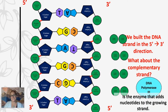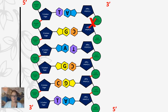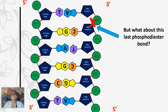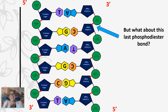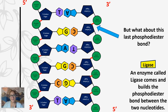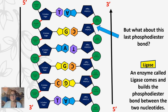DNA polymerase 3 is the enzyme that adds nucleotides to the growing strand. But there was a spot where there was no energy to form that phosphodiester bond. So there's a separate enzyme called ligase. Ligase acts like scotch tape or a welder — it comes and builds that last bond between the two nucleotides. Ligase is an enzyme that builds a phosphodiester bond between two nucleotides. Both strands are built in the five-prime to three-prime direction and are anti-parallel.